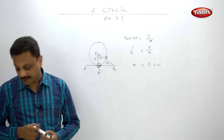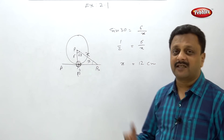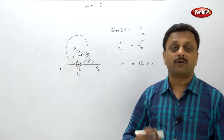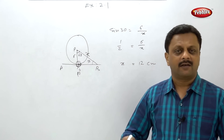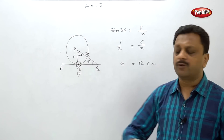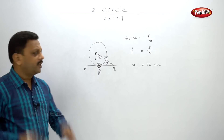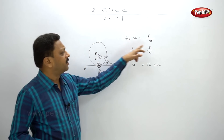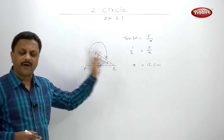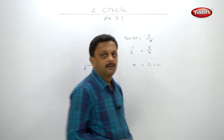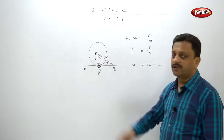Extremely simple example. I suggest in this case, don't write something like 'side opposite to 30 degrees is always equal to 1 upon 2 hypotenuse.' Directly make use of the 30-60 triangle. Write sine 30 equals 6 by X. Initially write X here — we have to find X. So sine 30 equals 6 upon X.